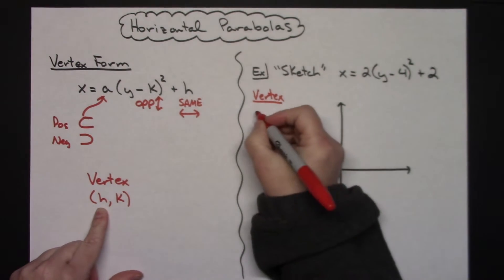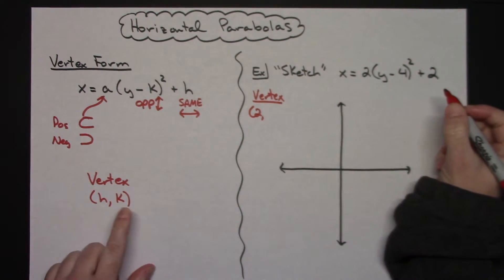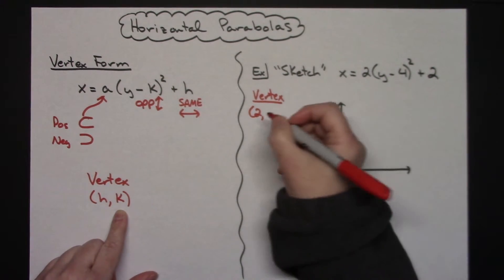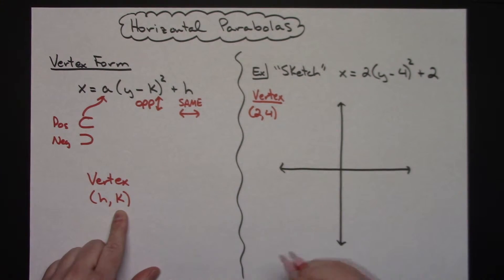So that's going to be a 2. And then my k value is going to come from in here, and it's got to be opposite there, so it's going to be 4. So at 2, 4 is going to be the vertex of this parabola.